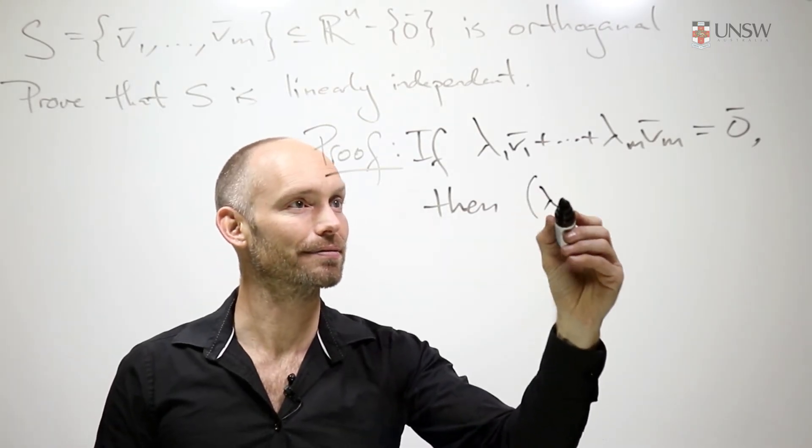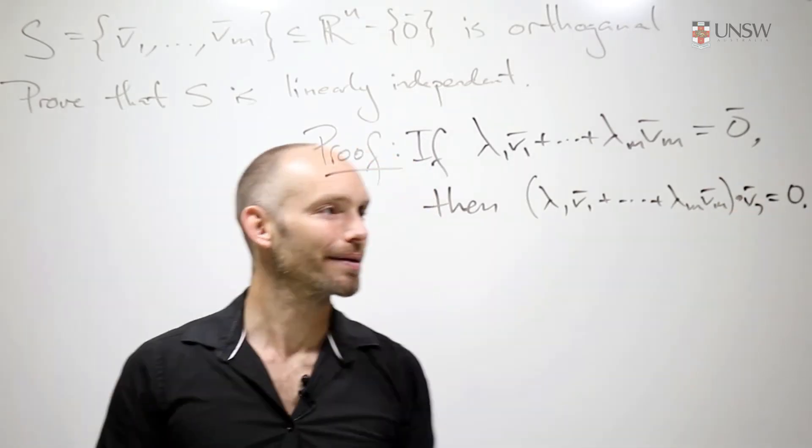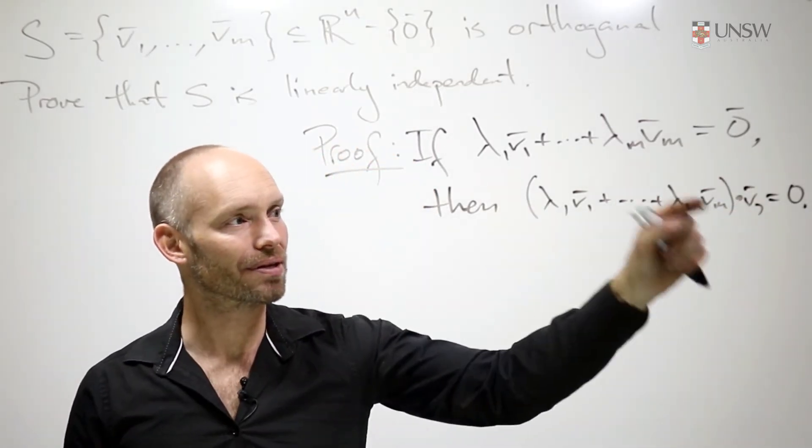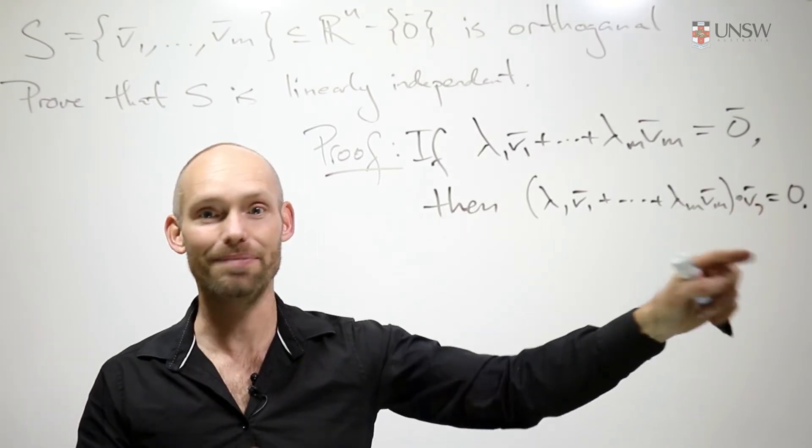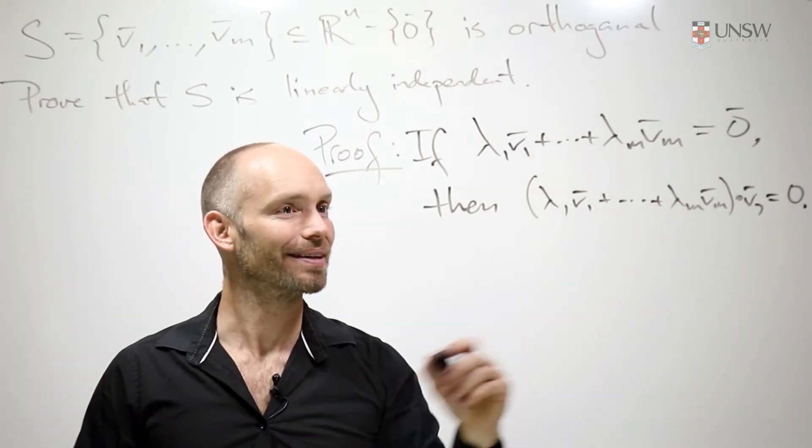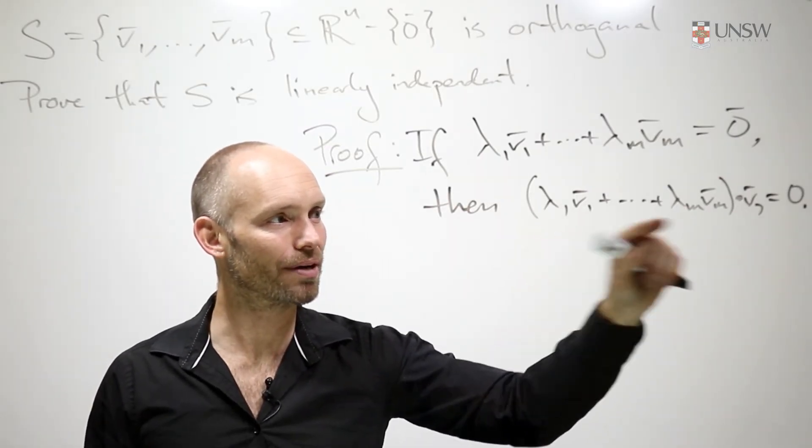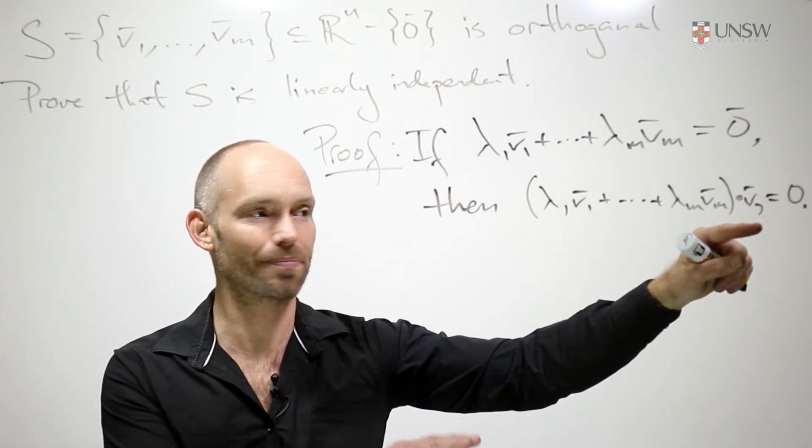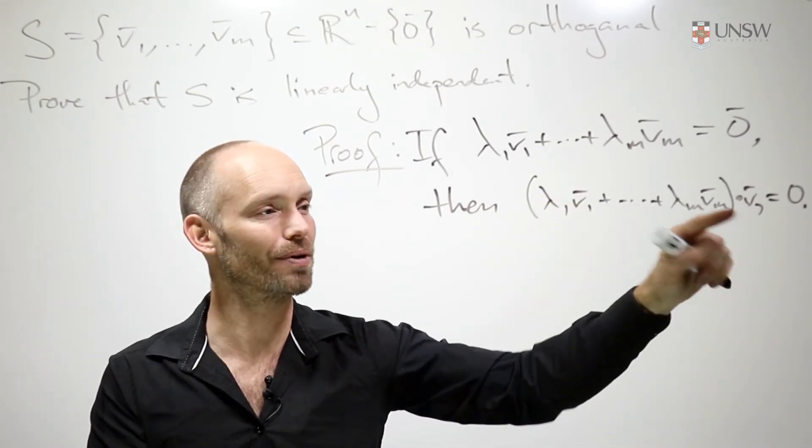So the left-hand side has been dotted with v_j. The right-hand side, dotted with anything, is just zero. Okay, what then? Well, let's have a close look at what we have when we take the dot product into the brackets and dot each of these individual terms by v_j.